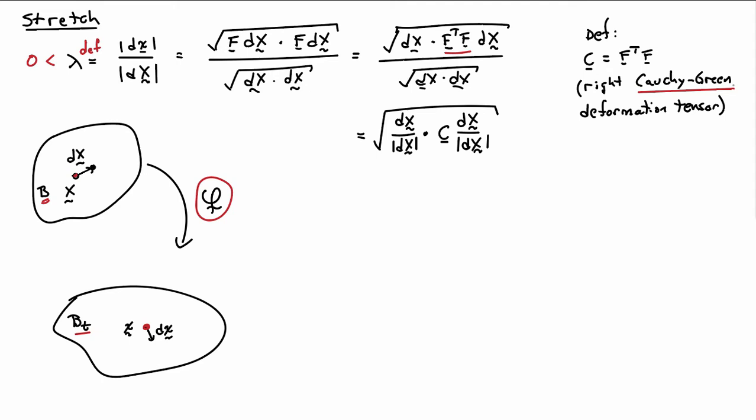So rearranging things a little bit, I end up with the square root of D capital X divided by the norm of D capital X dotted with C acting on D capital X divided by the norm of D capital X. So D capital X divided by the norm of D capital X, that's really just a unit vector. So we'll call that N, maybe let's go ahead and call it NR. So something associated with reference configuration. So it's just a direction, so it's the direction that we're looking at, at the point capital X.